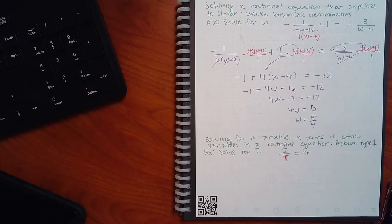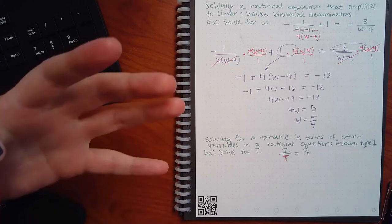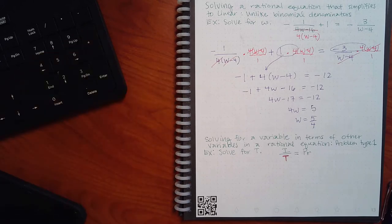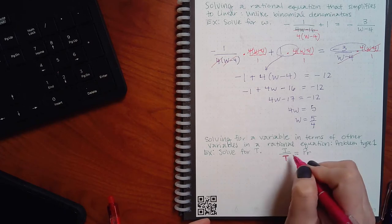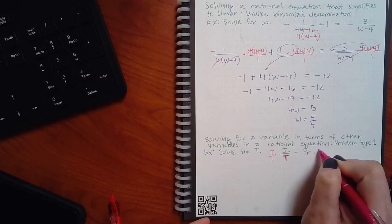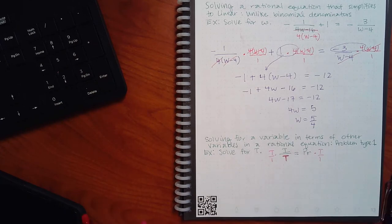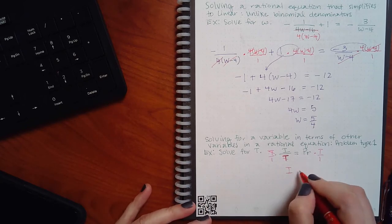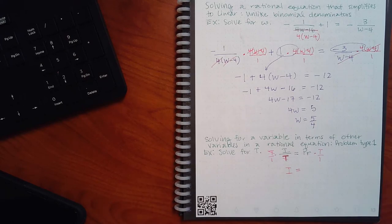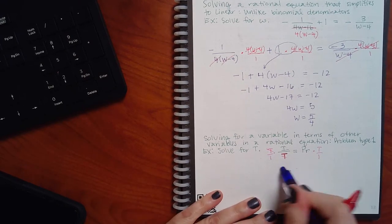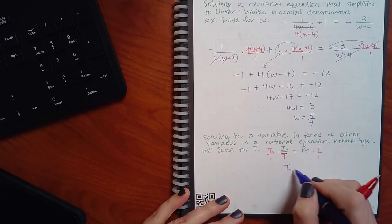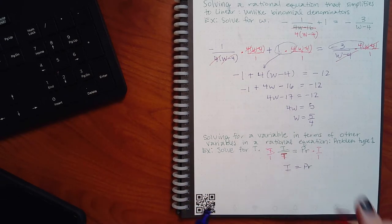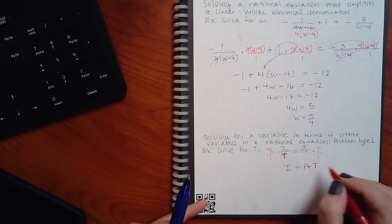We treat it just like any other equation. It's got fractions, it's got an equal sign, so I'm going to use the same strategy as before: multiply by the common denominator over one. The common denominator here is t, so I'm going to multiply by t over one on both sides. On the left-hand side I get I, and on the right side I equals p·r·t — I'll put the t in red to keep focus.